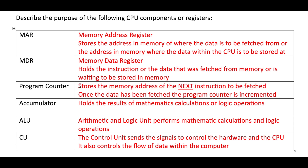The Program Counter stores the memory address of the next instruction to be fetched. It's very important to remember that it stores the address of the next instruction — in other words, the instruction that hasn't yet been decoded and hasn't been executed.